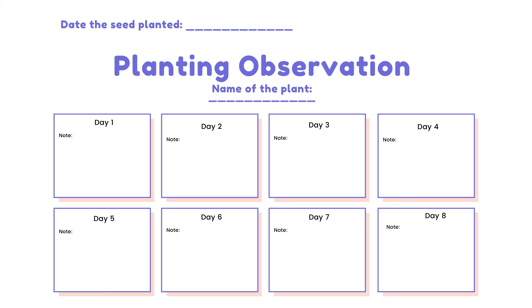You can draw the growth in the table from day one, day two, day three, and so on. Even though I show you only until day eight, don't stop at day eight — you can continue with day nine, day ten, and so on.